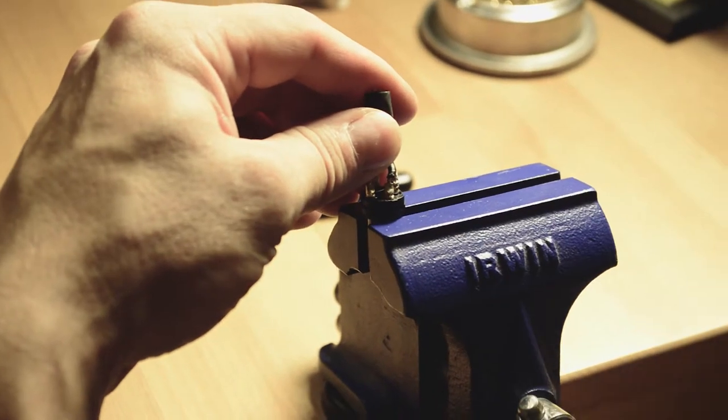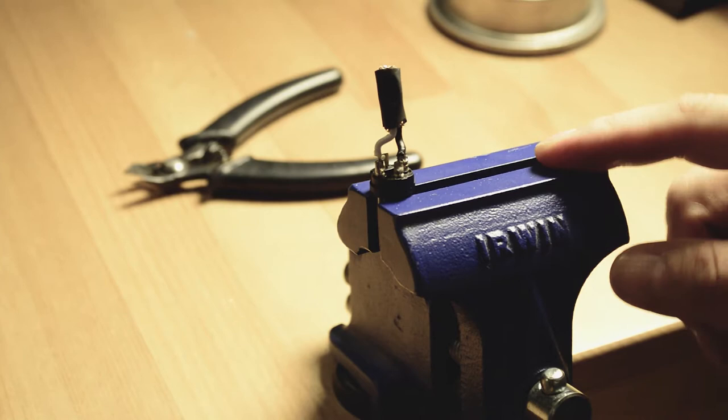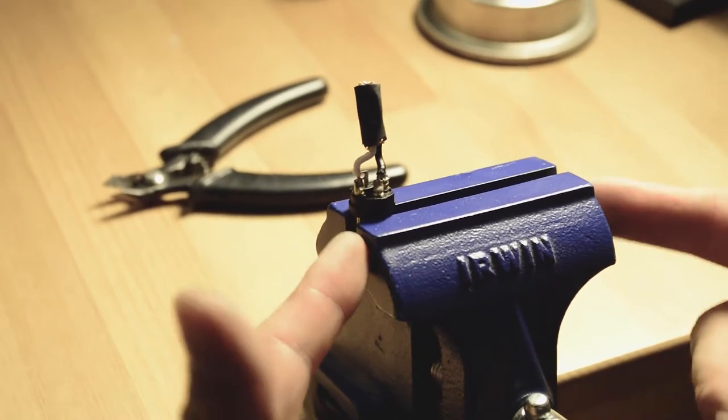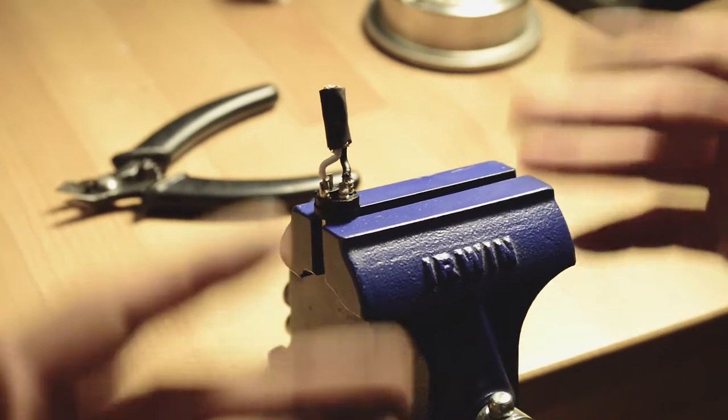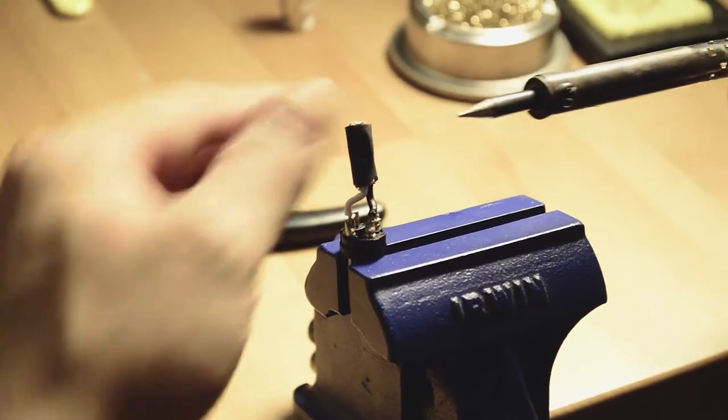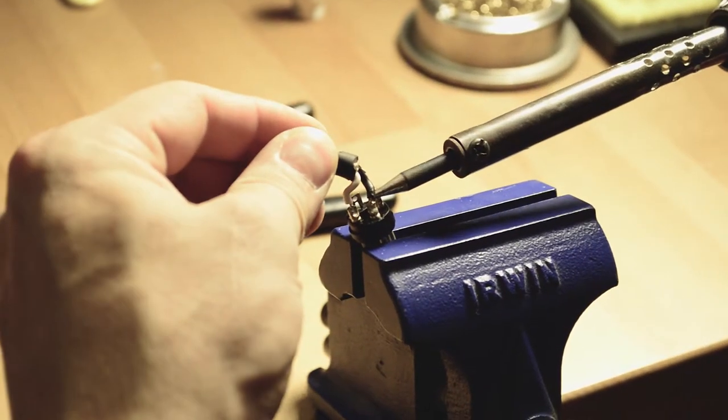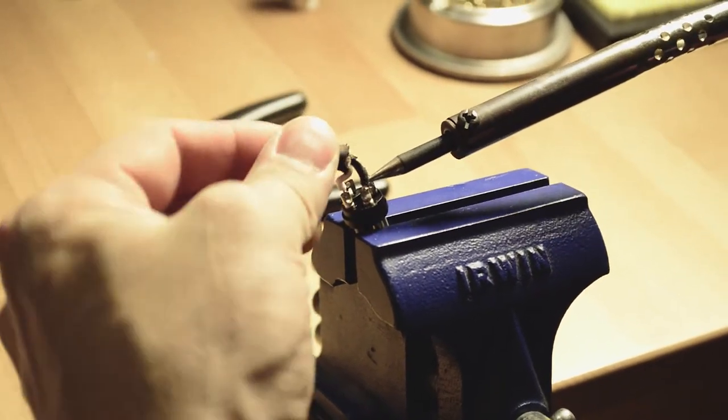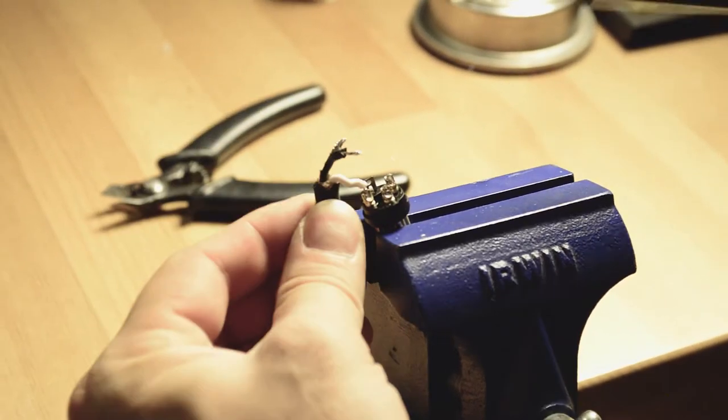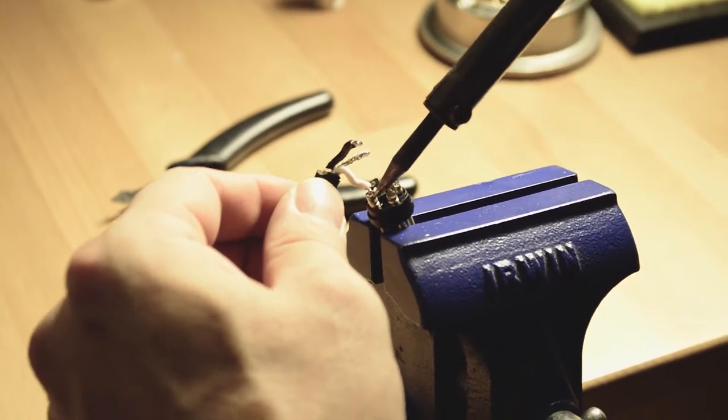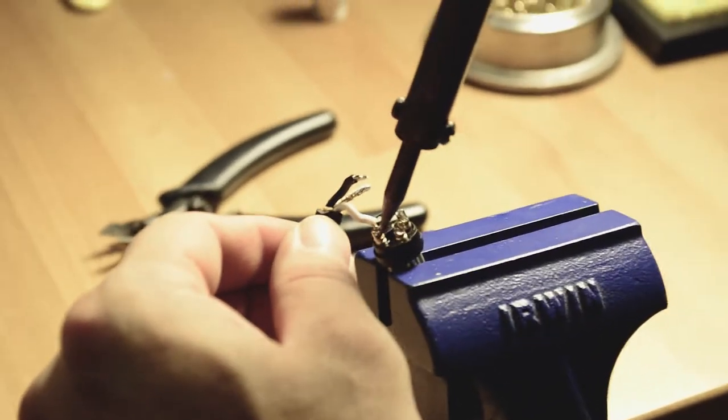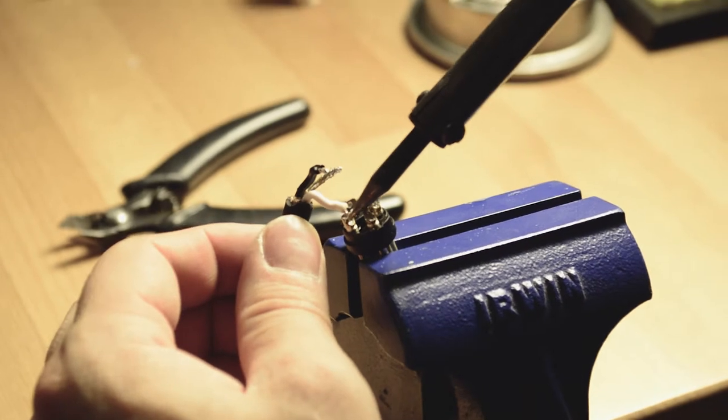So the first thing we're going to do is prepare the jack. This vise, by the way, is available on eBay or Amazon. It's very cheap. I think I paid $15 for this and it makes all of these jobs so much simpler. With a nice clean soldering gun, I'm going to start to remove the wires starting with the ground wire. Use extra caution here when you're pulling these wires out. It's very easy for the wire to flick out of the connector and splash solder at your face.